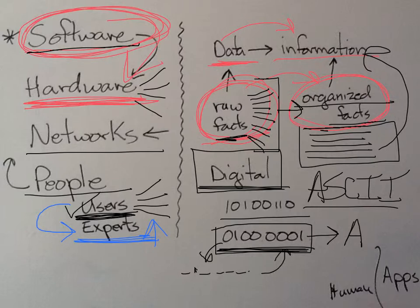When you download a movie or stream a movie from Netflix, what's really coming into your device at home is a bunch of ones and zeros. The software converts those ones and zeros into something that has meaning — pictures and slides on the screen.